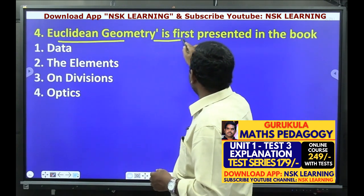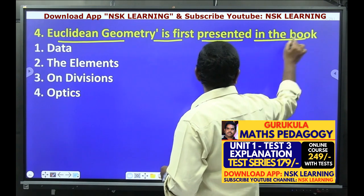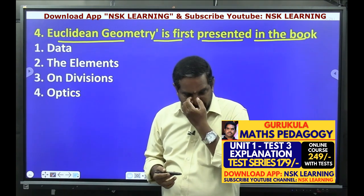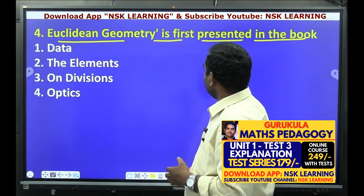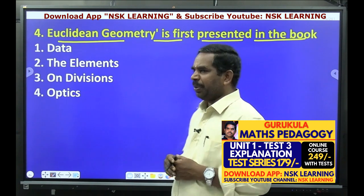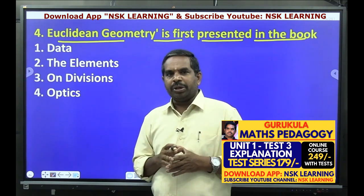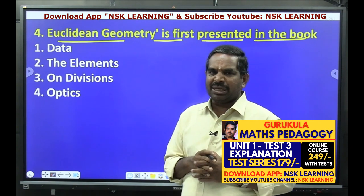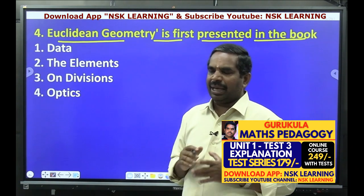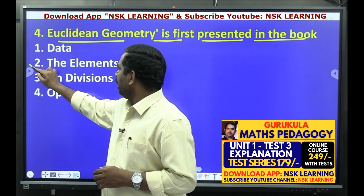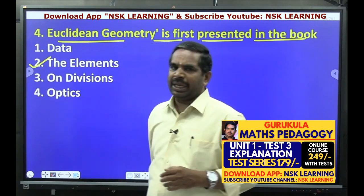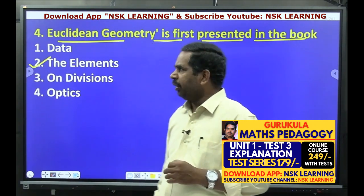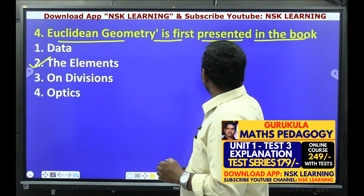Euclidean geometry is first presented in the book. Euclidean geometry ani it vanti book ni first present chedin — Euclid wrote 13 books known as 'Elements.' Euclidean geometry kurungichi Elements ani it vanti book lo Euclid mention chidaru.